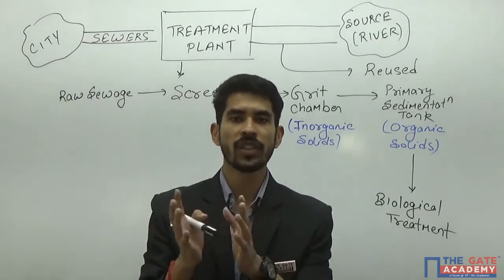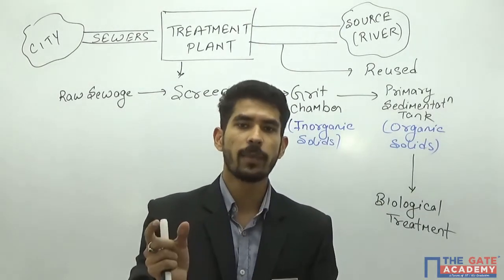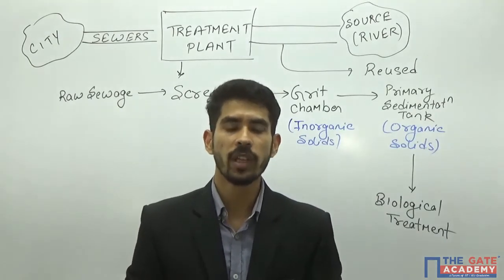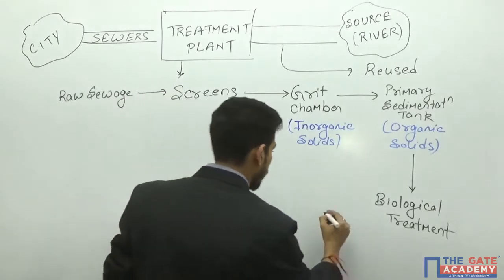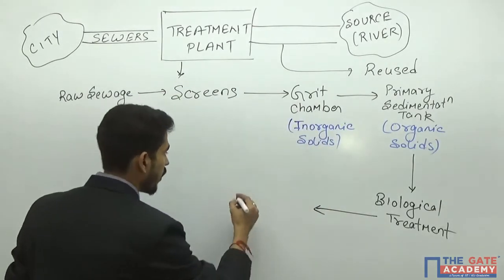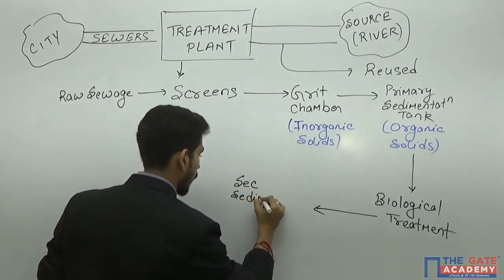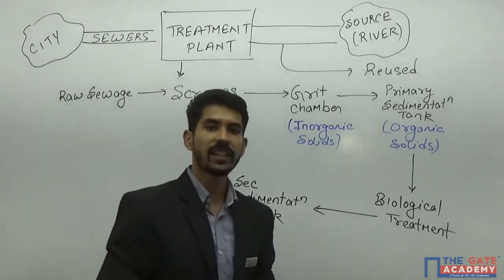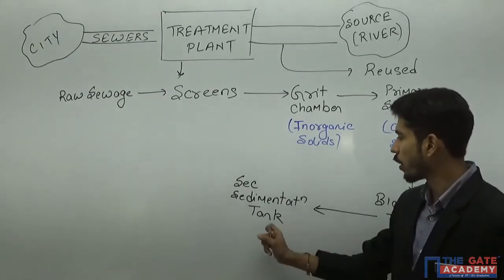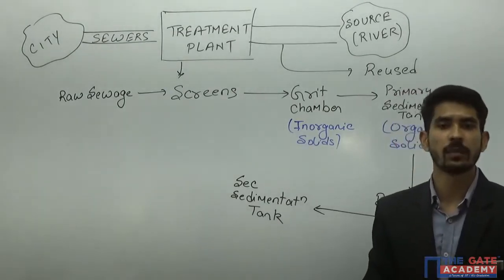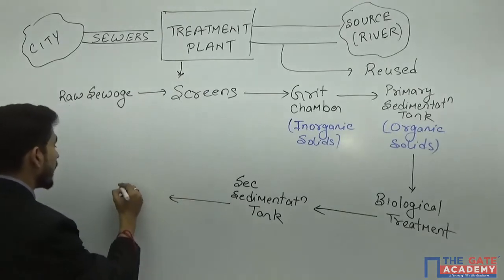After decomposition of organic matter, a stable product known as biomass is formed in suspension. To remove this biomass from the system, we provide a secondary sedimentation tank after biological treatment. The biomass formed in biological treatment is settled and removed in the secondary sedimentation tank.